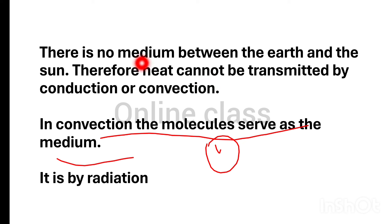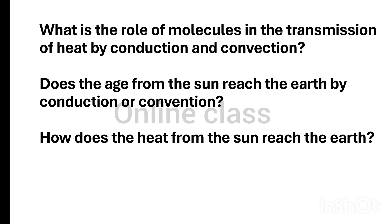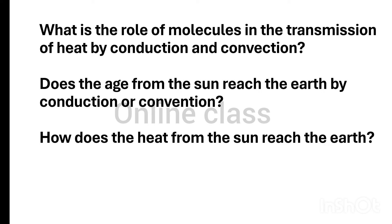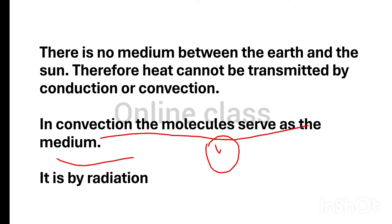There is no medium between the earth and the sun. Therefore, heat cannot be transmitted by conduction or convection. How does the heat from the sun reach the earth? It is by radiation.